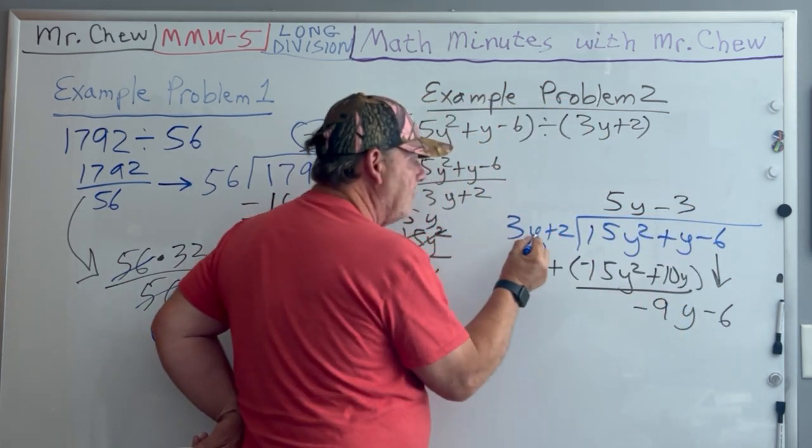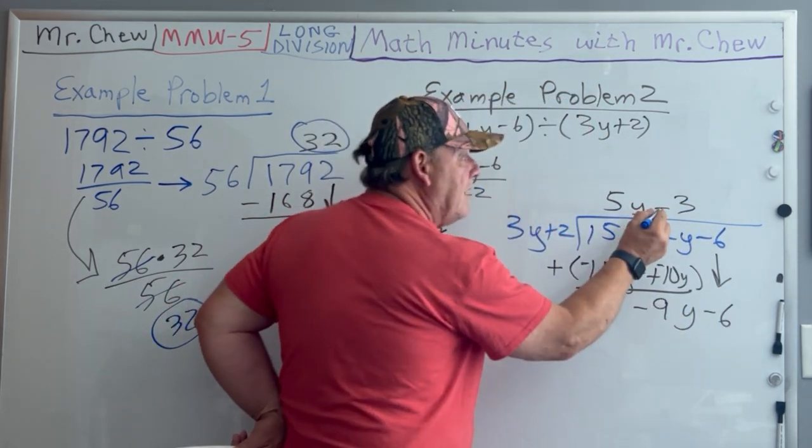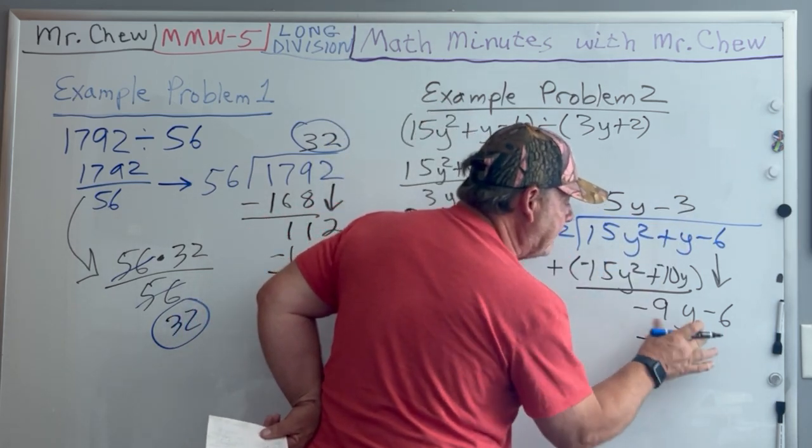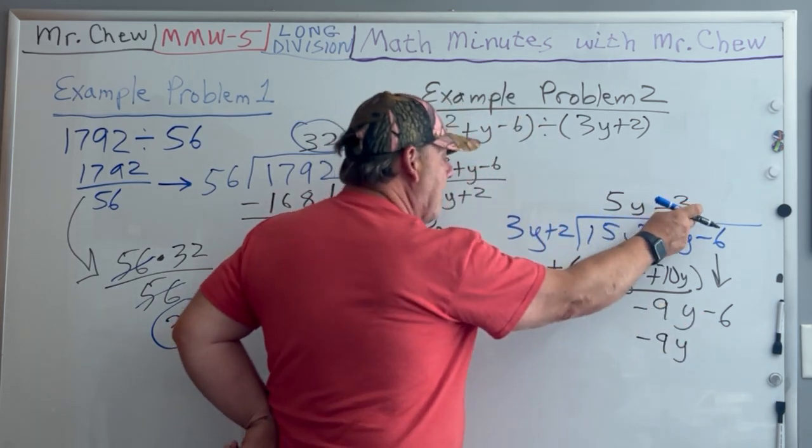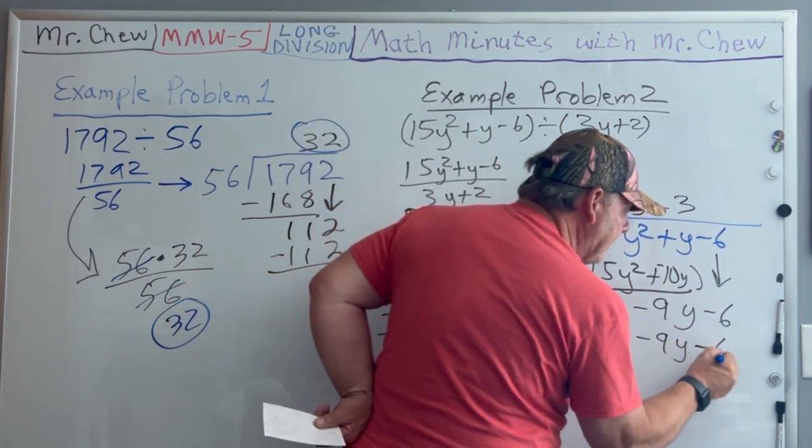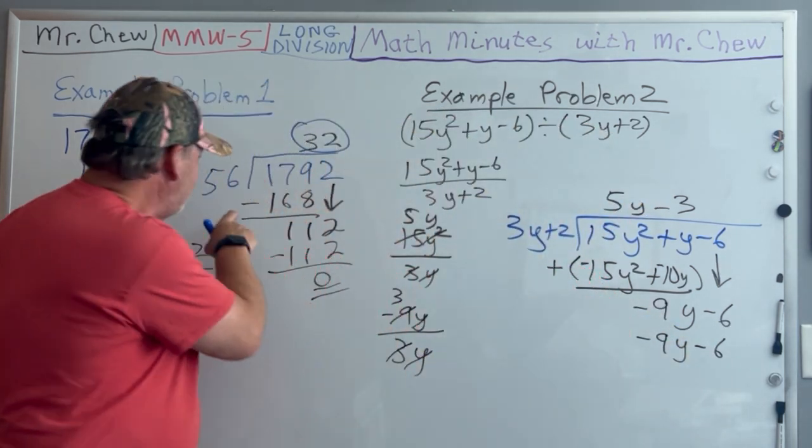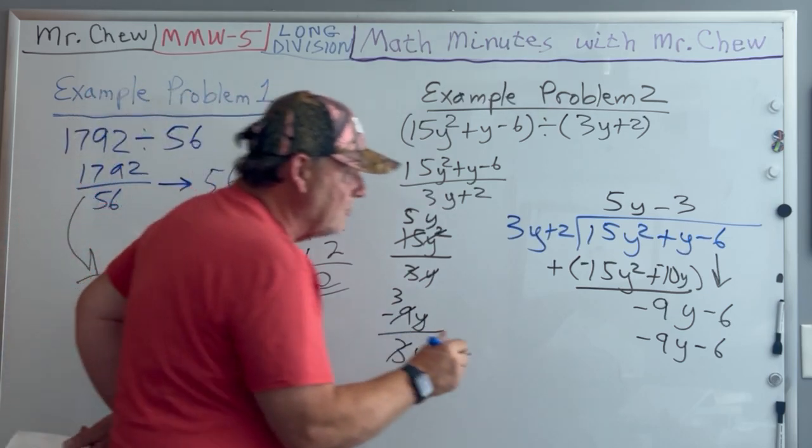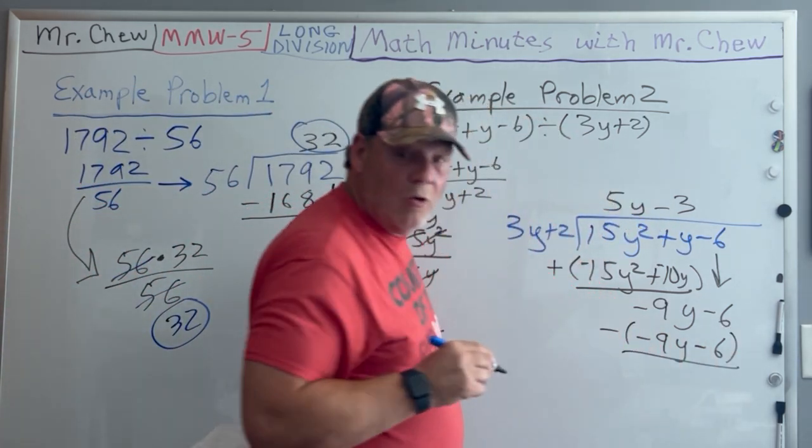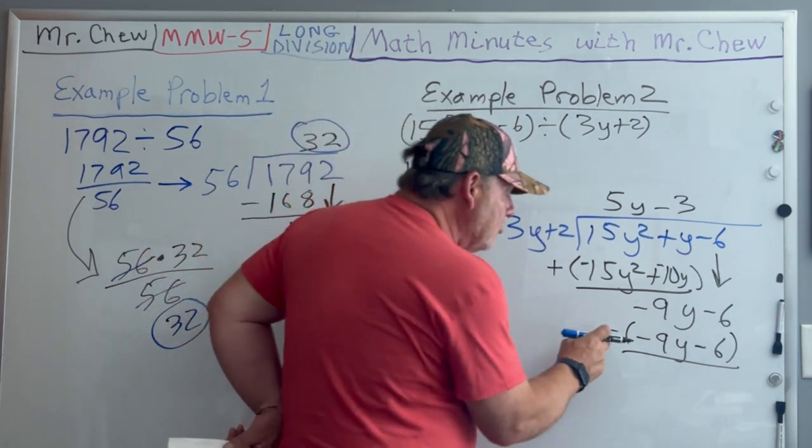-3 times 3y is -9y, I need the same exact thing here. -3 times +2 is -6. Remember what we did next? We subtract, so I'm going to subtract that whole line.